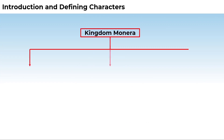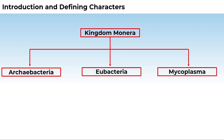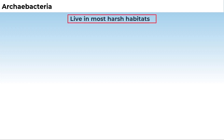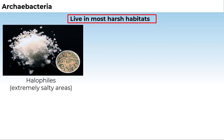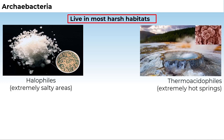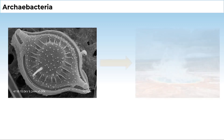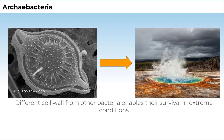Let us discuss three types of bacteria: archibacteria, eubacteria, and mycoplasma. Archibacteria are special since they live in some of the most harsh habitats. Examples are halophiles in extreme salty areas, thermoacidophiles in hot springs, and methanogens in marshy areas. Archibacteria differ from other bacteria in having a different cell wall structure, which is responsible for their survival in extreme conditions.